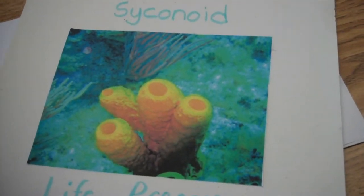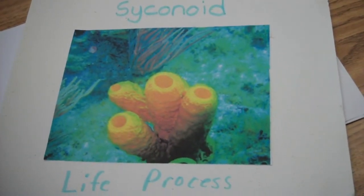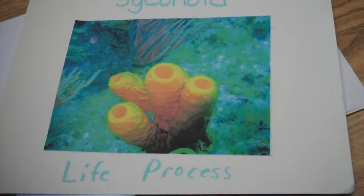One life process of a syconoid sponge is the respiratory system. The sponge filter feeds by absorbing water through its pores, then pushing the water out of the osculum.